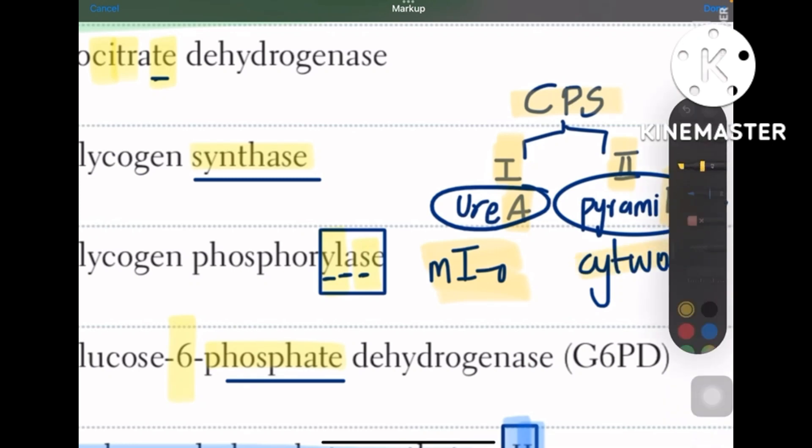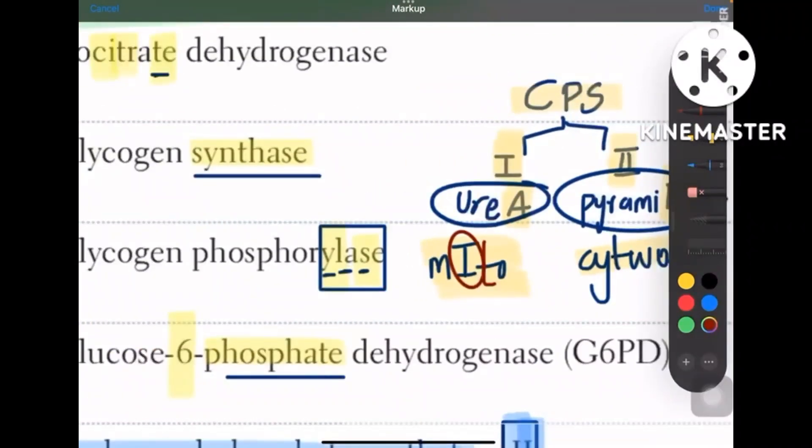So remember, right? CPS1 is in mitochondria whereas CPS2 is in cytoplasm.